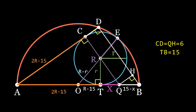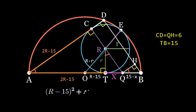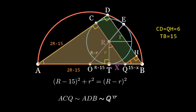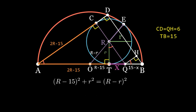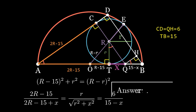Therefore, the angles I'm now marking red are equal. For the highlighted triangle, let's write the Pythagorean equation. Since these three triangles are similar by two angles, let's write the equality of the similarity coefficients. Thus, we obtain a system linking all three unknowns, and find that the desired radius is 10.